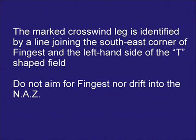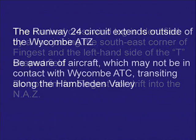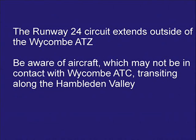The marked crosswind leg is identified by a line joining the south-east corner of Fingrist and the left-hand side of the T-shaped field. Do not aim for Fingrist, nor drift into the noise abatement zone. The Runway 24 circuit extends outside of the Wycombe ATZ. Be aware of aircraft which may not be in contact with Wycombe Air Traffic Control, transiting along the Hambleton Valley.